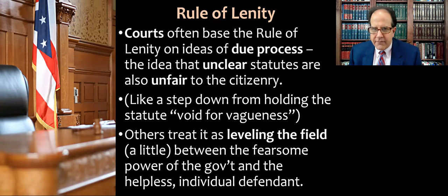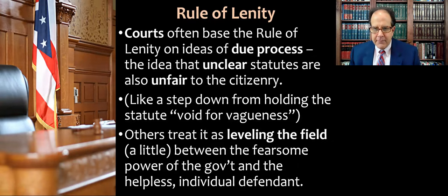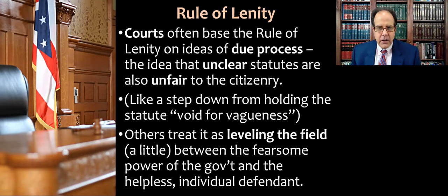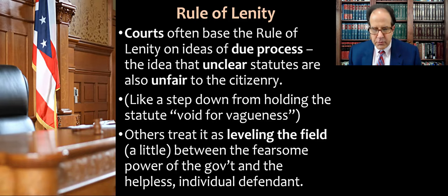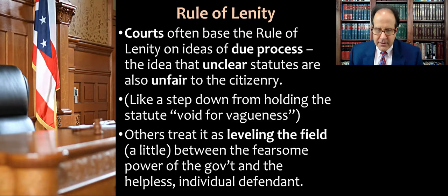Courts often base the rule of lenity on ideas of due process — the idea that unclear statutes are unfair to the citizenry. Someone who wants to obey the law doesn't really know how to conform their behavior, and all of a sudden they're being prosecuted and caught by surprise. Ignorance of the law is no excuse, but we don't want open-ended vague rules construed against criminal defendants. You could think of this as a step down from holding a statute void for vagueness: if it's not so vague that we have to invalidate it on constitutional grounds, we can construe the ambiguity in the direction of favoring the defendant.